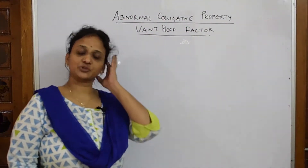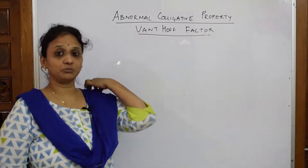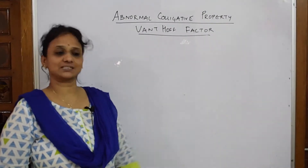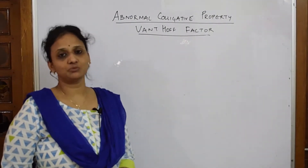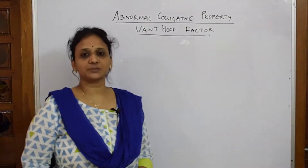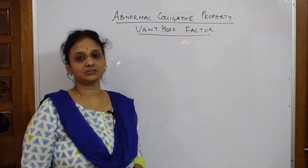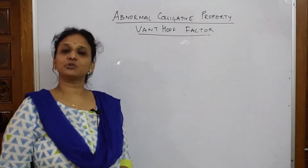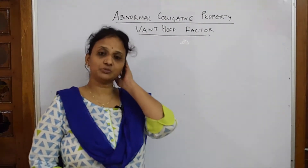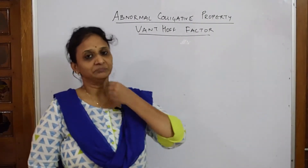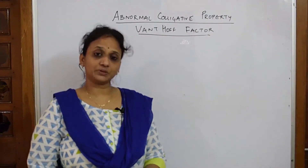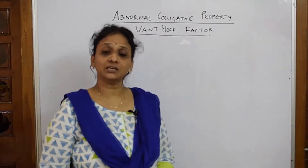Welcome back students to your last topic of the chapter: abnormal colligative properties and abnormal molar mass. In your NCERT textbook, the heading is given as abnormal molecular mass or molar mass. We have already studied four types of colligative properties: relative lowering of vapor pressure, elevation in boiling point, depression in freezing point, and osmotic pressure. We will end the topic with this concept of abnormal colligative property.